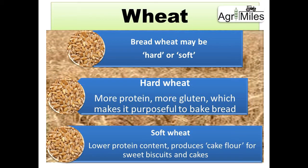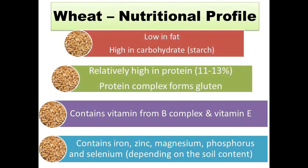Bread wheat may also be divided into two types: hard wheat and soft wheat. Hard wheat has more protein content and more gluten, which makes it useful for baking bread. Soft wheat has lower protein content and produces cake flour, which is useful for making sweet biscuits and cakes. Regarding the nutritional profile of wheat, the wheat grain has low fat content but higher carbohydrate content. The storage protein content is also relatively higher compared to other cereals.